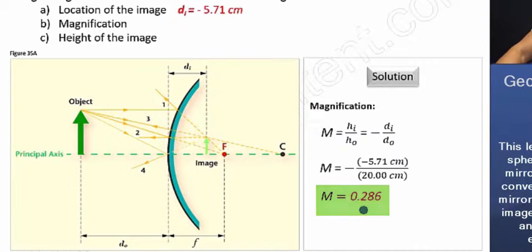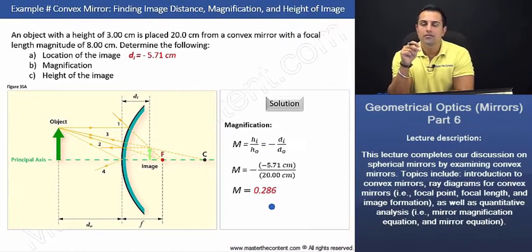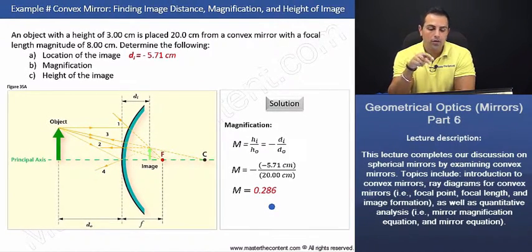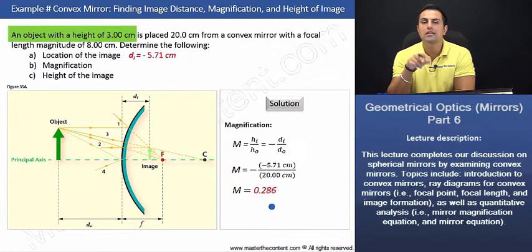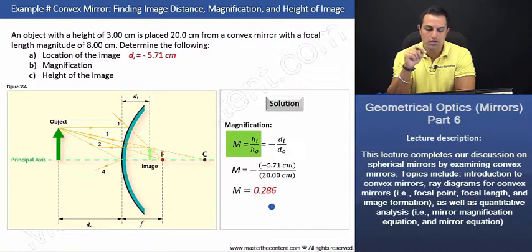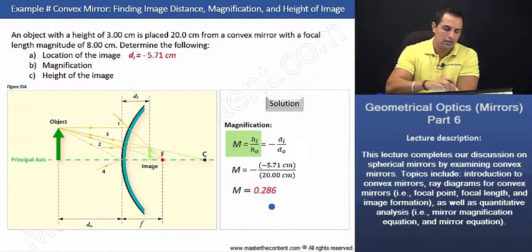Recall, magnification is dimensionless, and as we expected, it's positive, and the magnitude is less than 1. Now that we know the magnification, and in our problem we're given the height of the object, we can easily find the height of the image using the magnification equation. Let's go ahead and do that now on the next slide.